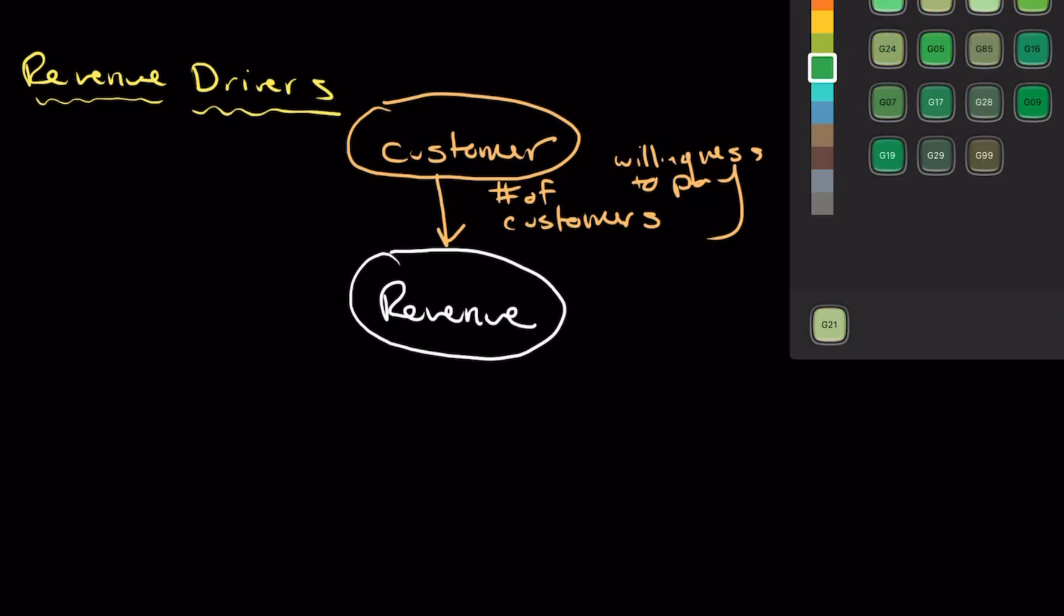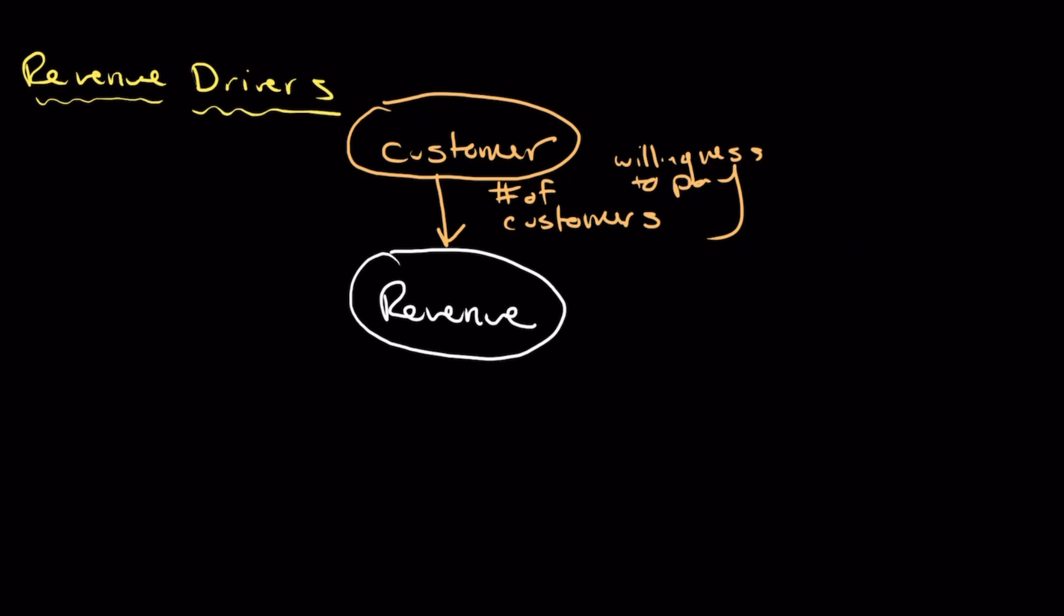Understanding who your customer is, how many there are, and their willingness to pay is a really good place to start when trying to figure out revenue potential. The next thing we're going to focus on is frequency. This one should be pretty self-explanatory, but our frequency is ultimately how many times people are willing to purchase in a given period of time.